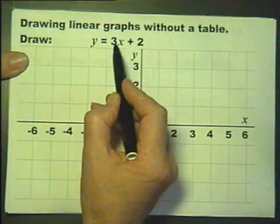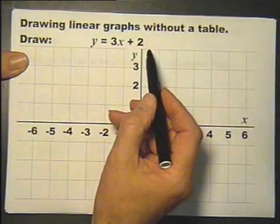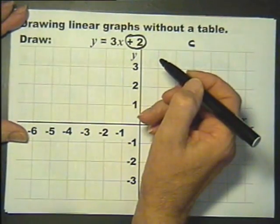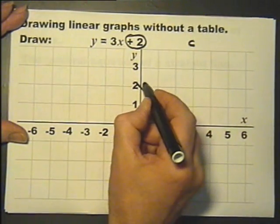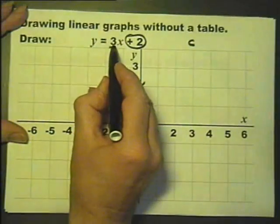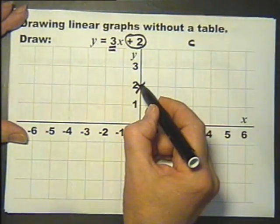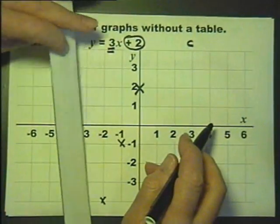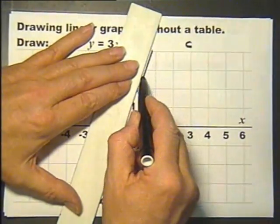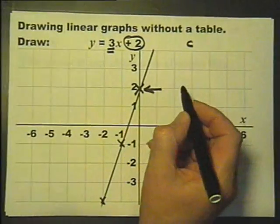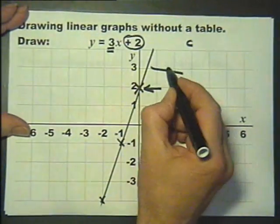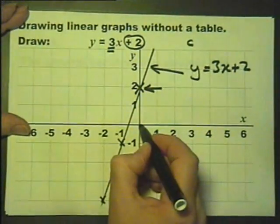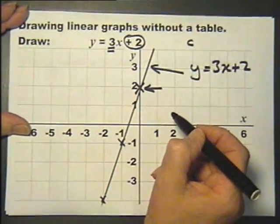So let's draw this graph y equals 3x plus 2 without a table of values. The first thing is this part here tells me where it cuts through the y-axis. It cuts through the y-axis at plus 2. This tells me the graph has got a gradient of 3, so if I count 3, 1, 3, 1, I know that it's going to go through those points because that graph does pass through the y-axis at 2 and it does have a gradient of 3. Therefore that is the graph y equals 3x plus 2, remembering about the scale on both axes being the same for the gradient bit.